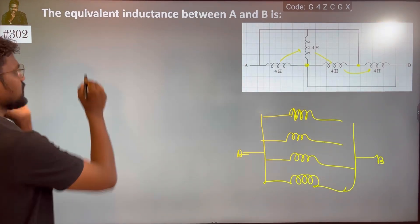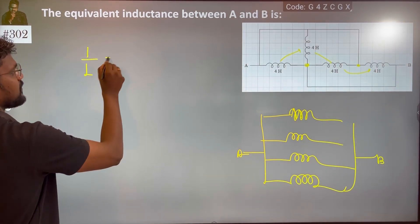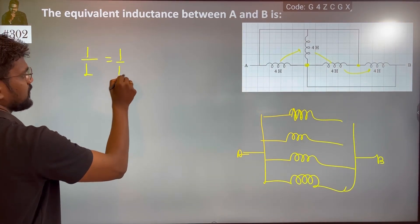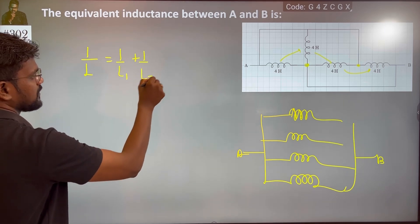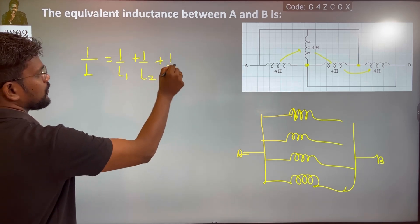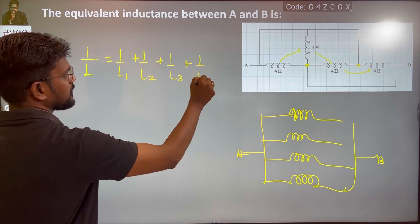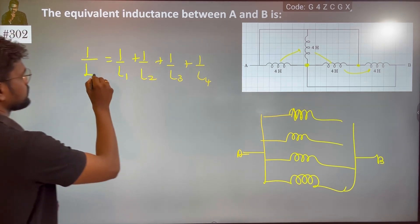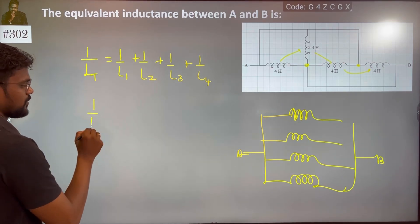It is very simple. So, for parallel inductance: 1 by L1, plus 1 by L2, plus 1 by L3, plus 1 by L4 equals the total effective inductance. So, 1 by L total